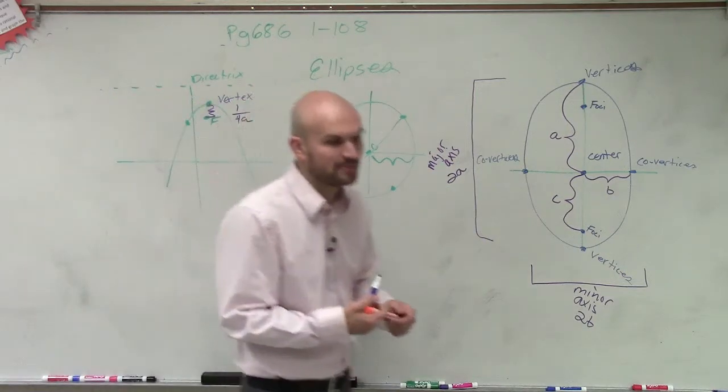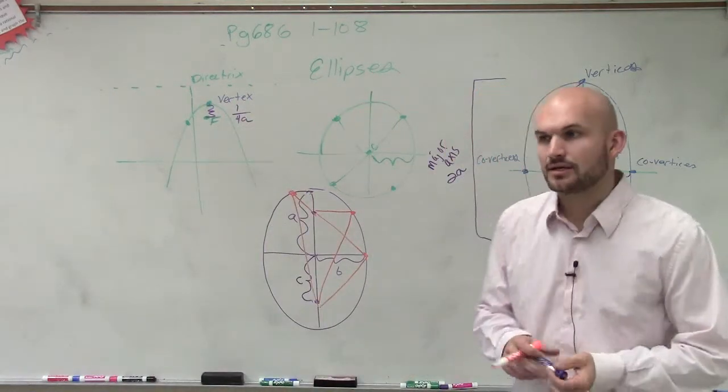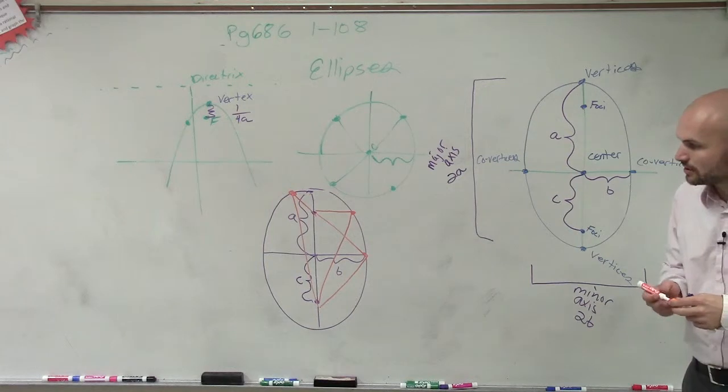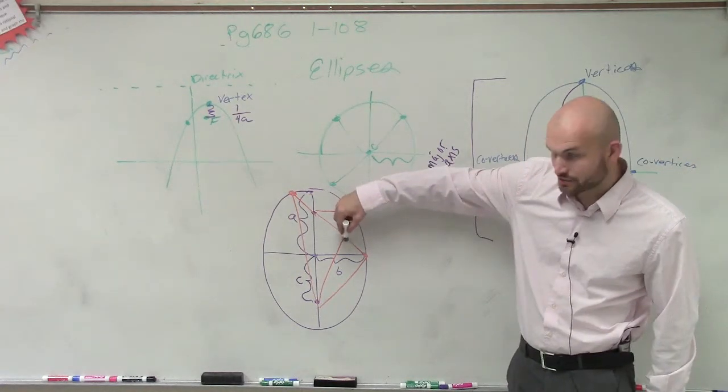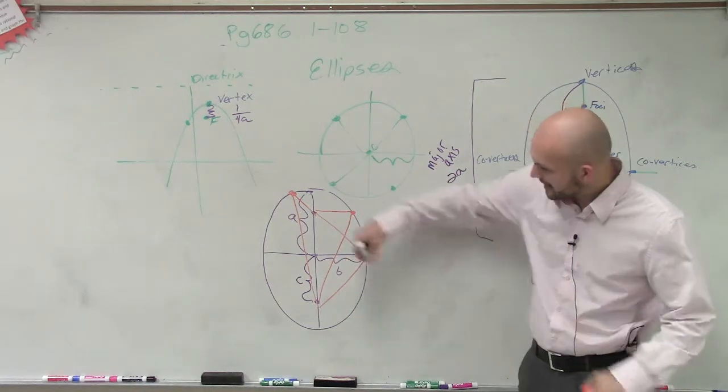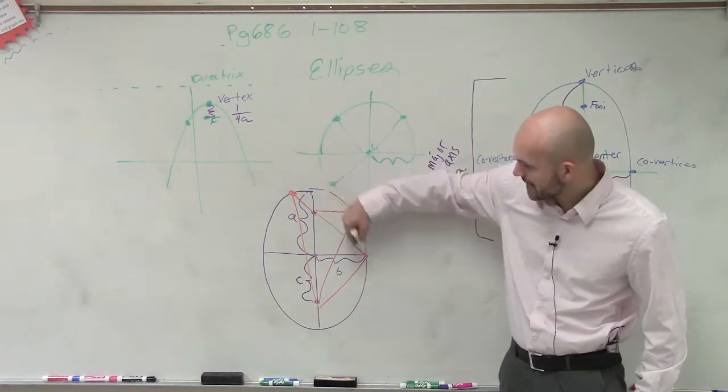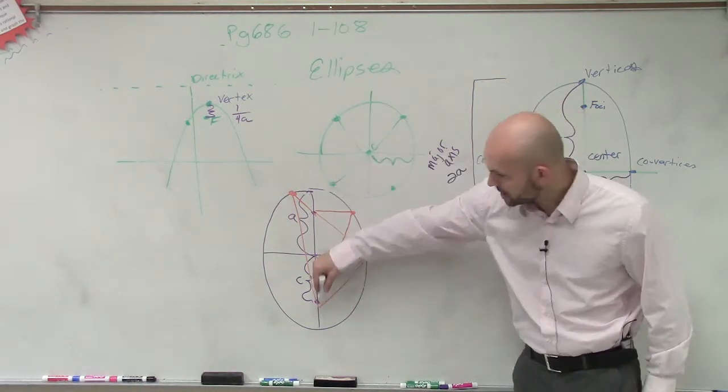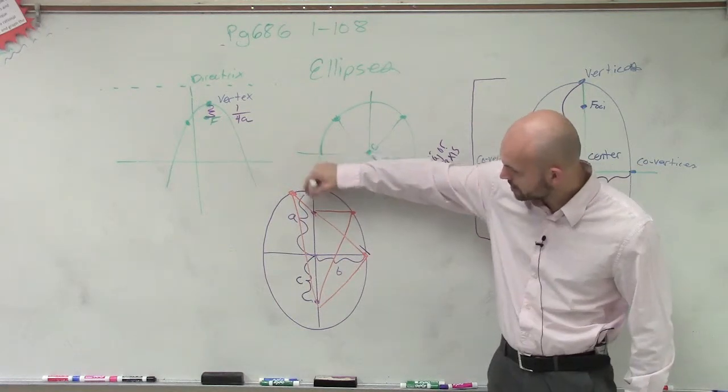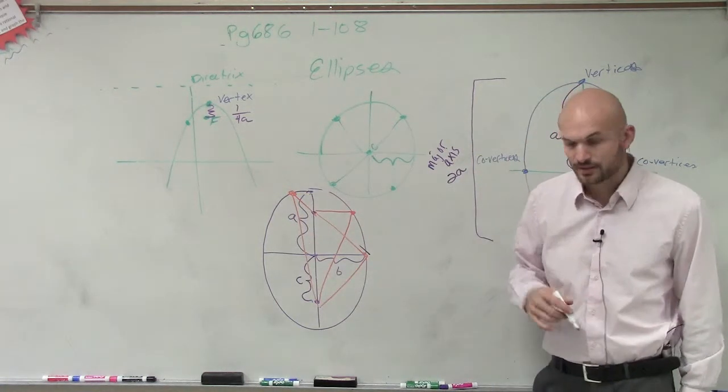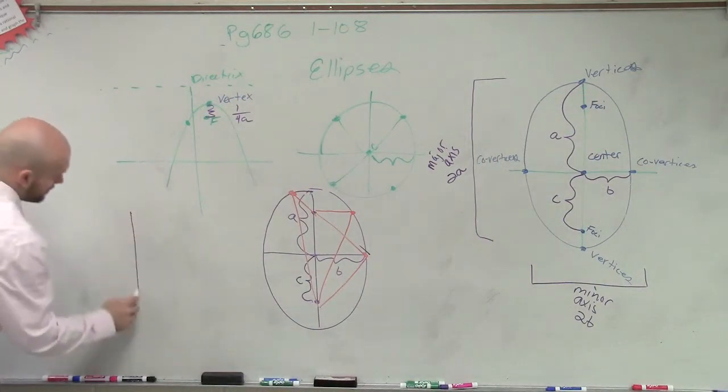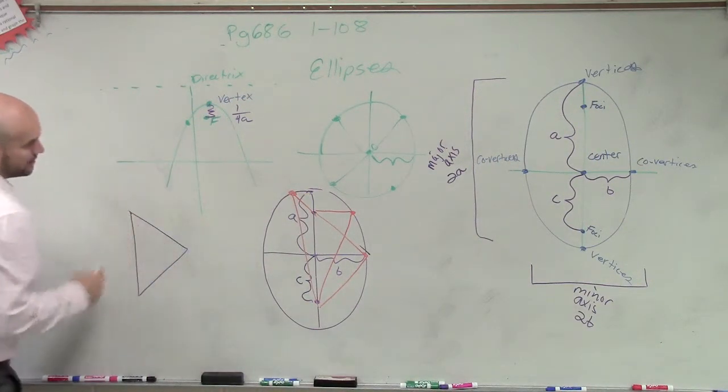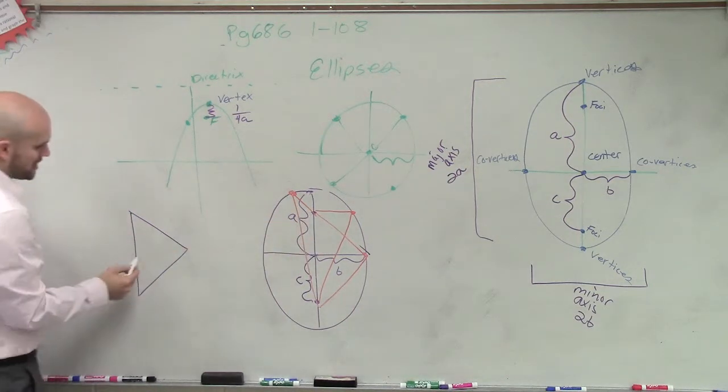Now, how does that kind of help us out as far as with this? Well, let's go and take a look at this distance right here. Let's go and take a look at these two lines. I know that the sum of these two lines is going to equal the sum of these two lines, which will equal the sum of these two lines, right? Now, if I was just going to kind of pull apart that triangle real quick, because I pretty much grabbed our two triangles.